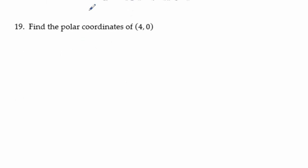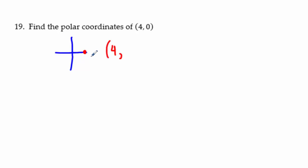Problem 19: find polar coordinates of (4, 0). Graph it: 4 to the right, not up or down. So r = 4. The angle is 0 or 2π — you only need to write one. The answer is (4, 0) or (4, 2π).